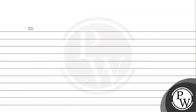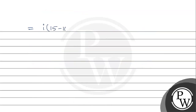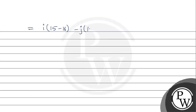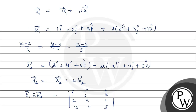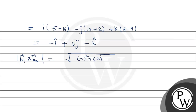So B1 × B2 = i(3×5 − 4×4) − j(2×5 − 3×4) + k(2×4 − 3×3) = i(15−16) − j(10−12) + k(8−9) = −i cap + 2j cap − k cap. The magnitude |B1 × B2| = √((-1)² + 2² + (-1)²) = √(1+4+1) = √6.